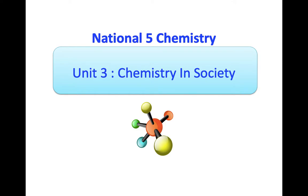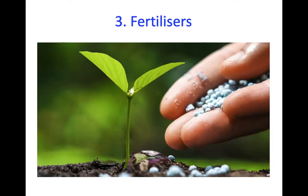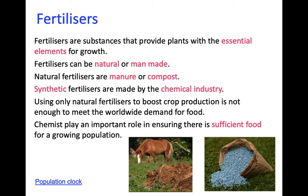Hello guys, welcome to another lesson in Unit 3 Chemistry in Society. Today we are moving on to talk about fertilisers. Fertilisers are added to soil to increase the fertility and to boost plant growth. They do so by providing plants with the essential elements that they need in order to grow. They are very important for ensuring the food demand for 7 billion people is met, and unfortunately natural fertilisers such as manure or compost are not enough to meet the worldwide demand for food. For that reason, chemists play an important role in making synthetic fertilisers in the chemical industry.